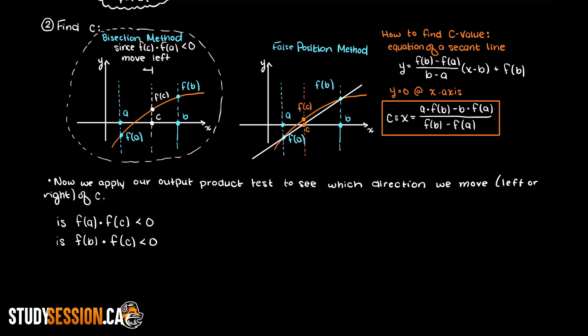So we repeat this process for the right of our root and see if output b times c is equal to or less than zero. Whichever side's product gives you less than zero, you know that your root lies in that direction.